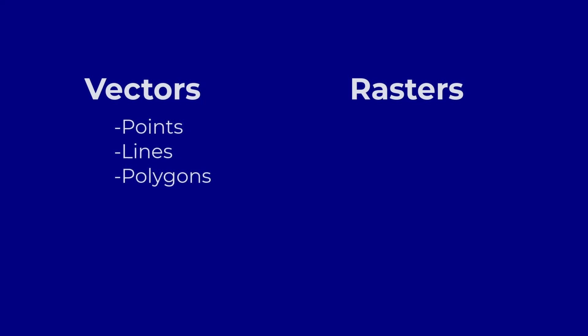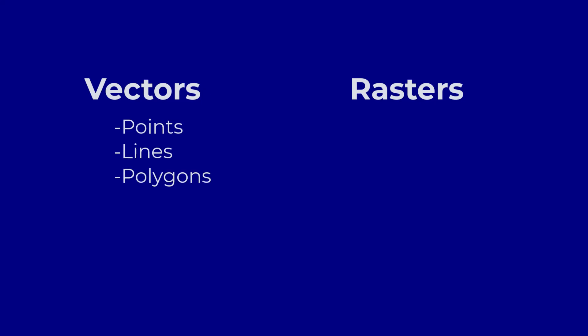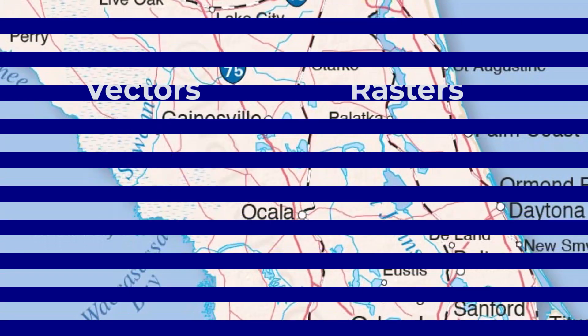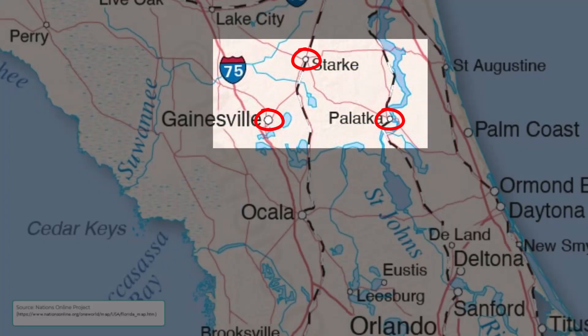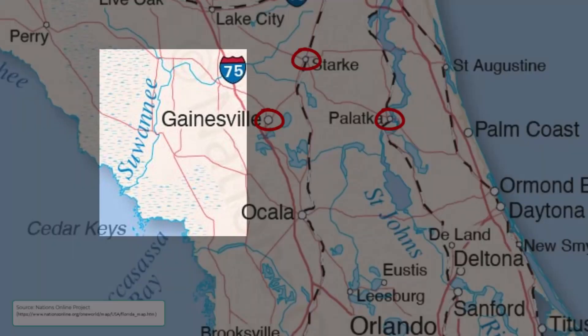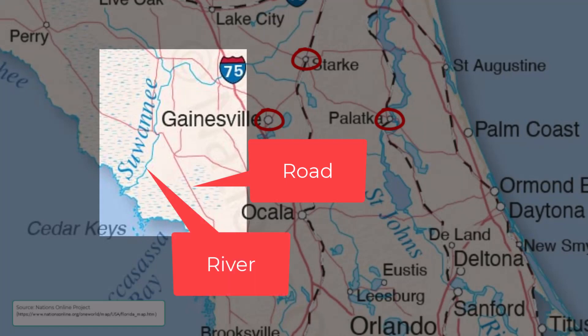To explain these, I think that some examples are in order. Points are commonly used to represent cities or towns on maps. Lines represent things that are, well, linear. Some examples of that are streets, railroad tracks, and rivers.